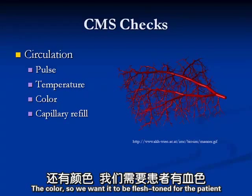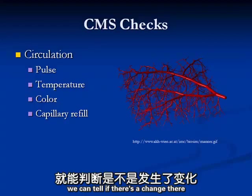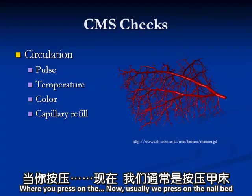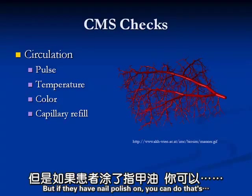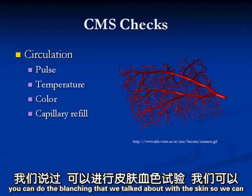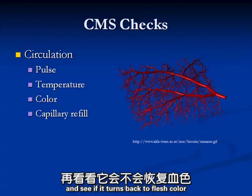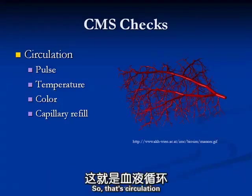Color: we want it to be flesh-toned for the patient. Comparing to the other side tells us if there's a change. And then capillary refill - we press on the nail bed, it turns white, then release it and it should turn pink again in less than three seconds. If they have nail polish on, you can do the blanching test on the skin anywhere. We press on the skin and see if it turns back to flesh-colored. In darker-skinned folks, that's harder to tell. That covers circulation.